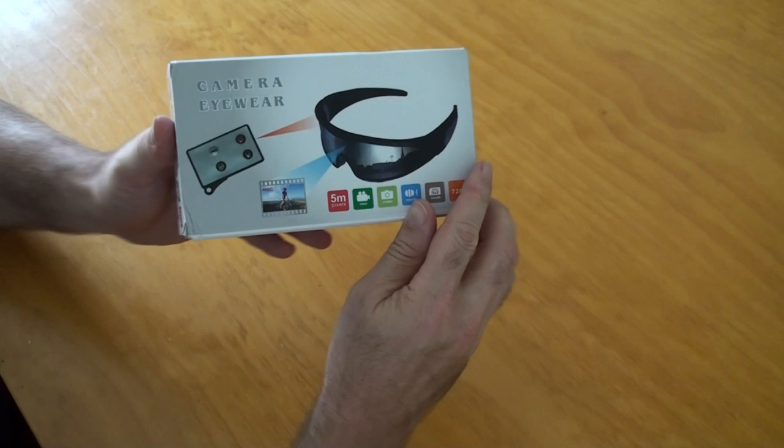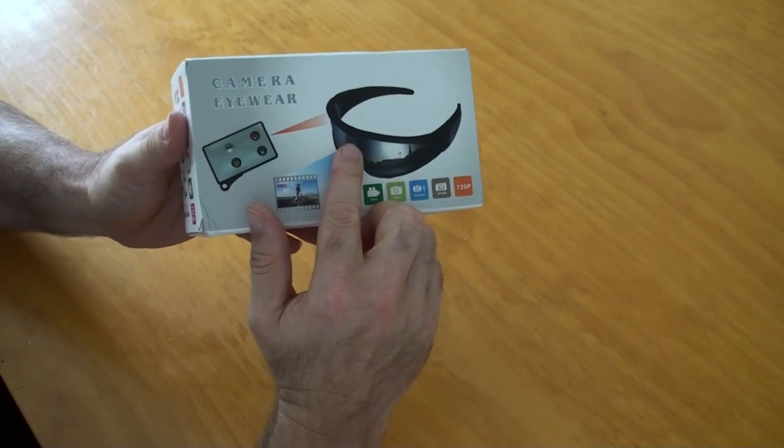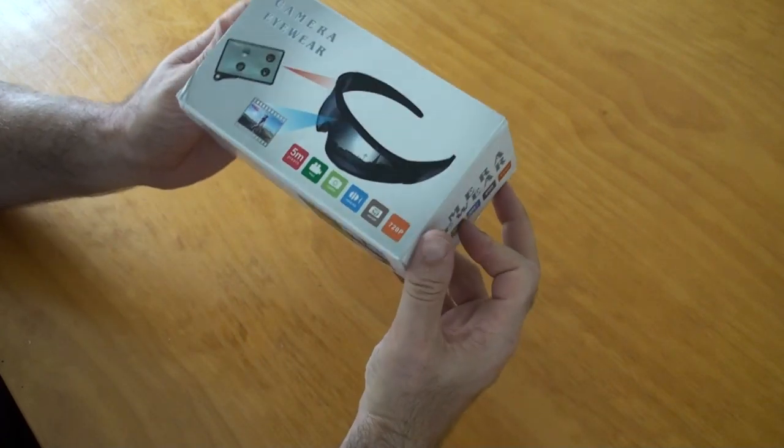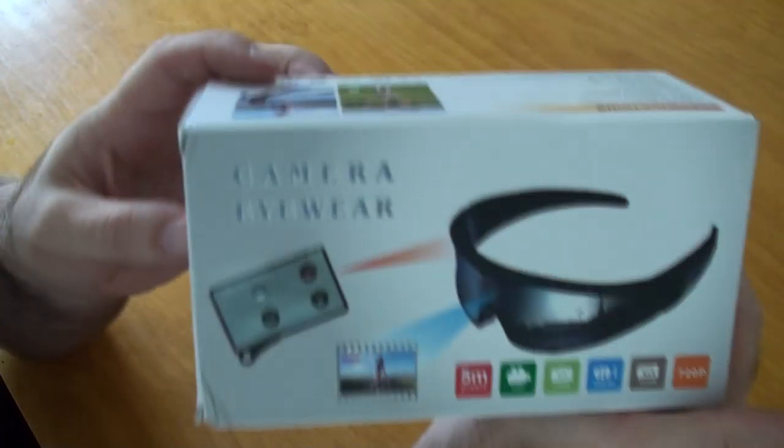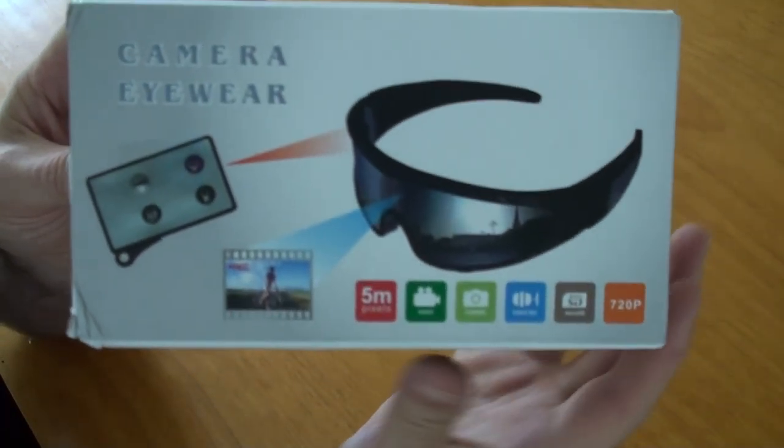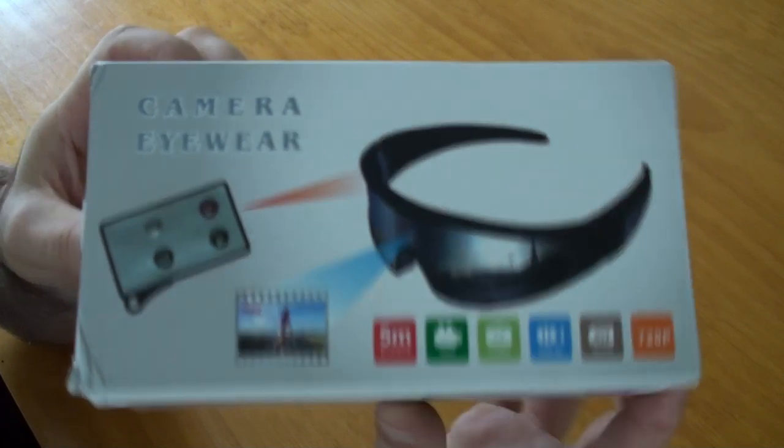Basically a set of sunglasses that have a HD camera in the lens there. I got this off eBay for about $80 if memory serves me correctly. It's a 720p video recording.